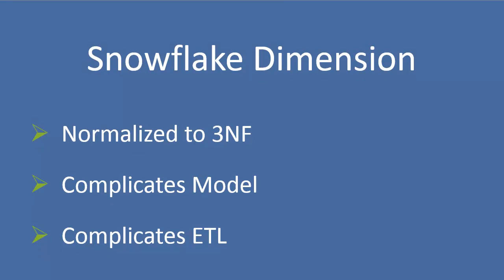A snowflake dimension is a dimension that's been normalized. Meaning we have a dimension that probably has a hierarchy of attributes of some sort and those attributes have been placed each in separate dimensions which have then been related via foreign keys.